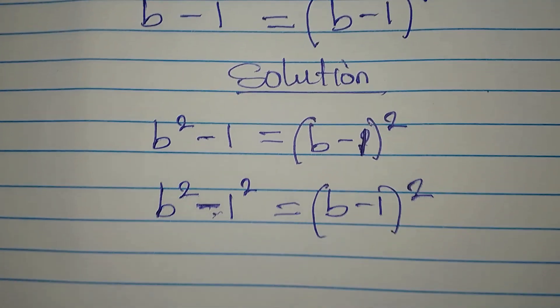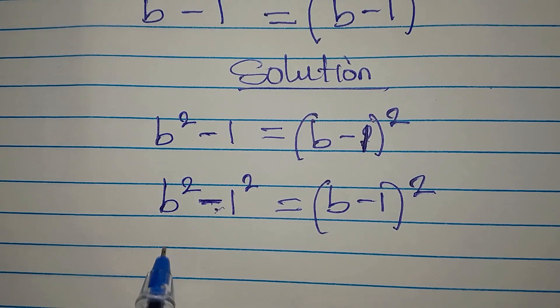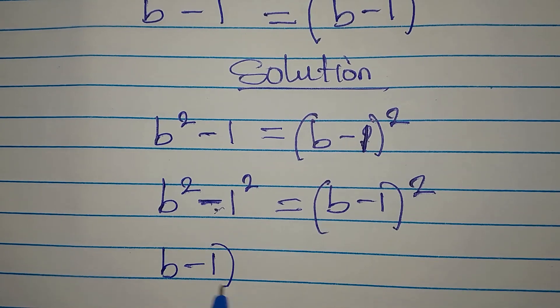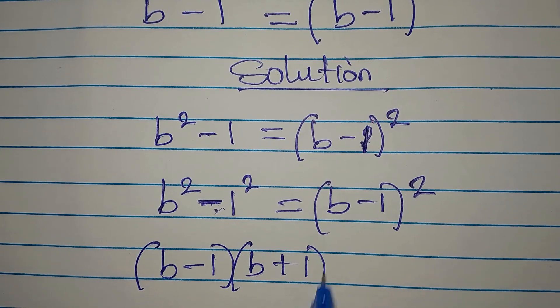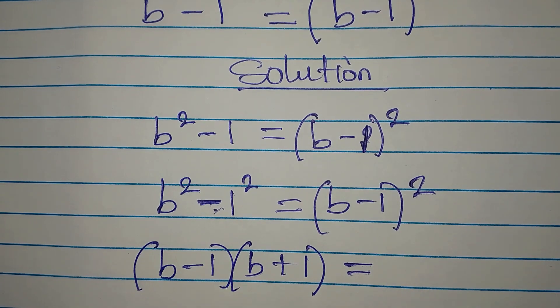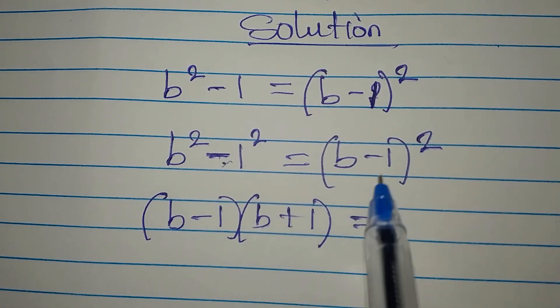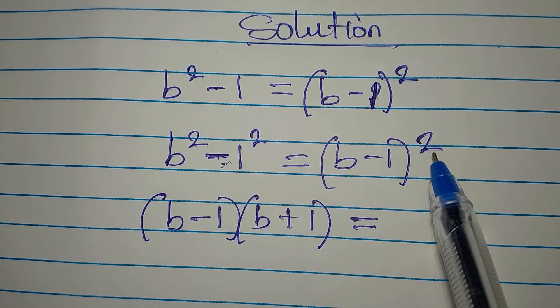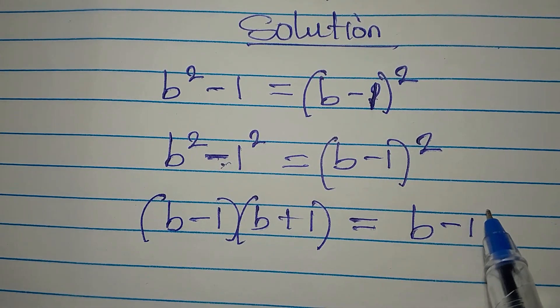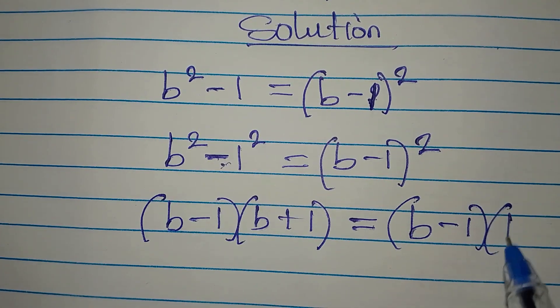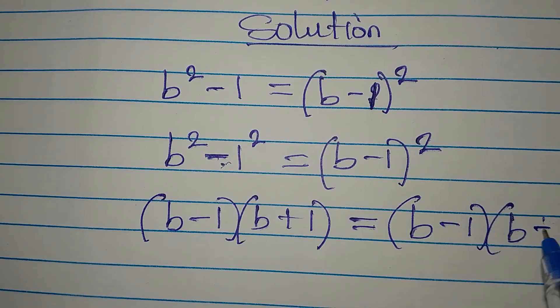So now our difference of two squares will be b minus 1 into b plus 1. Then on the right hand side, we are going to write this in two places because of the square on it. So we write b minus 1 into b minus 1.